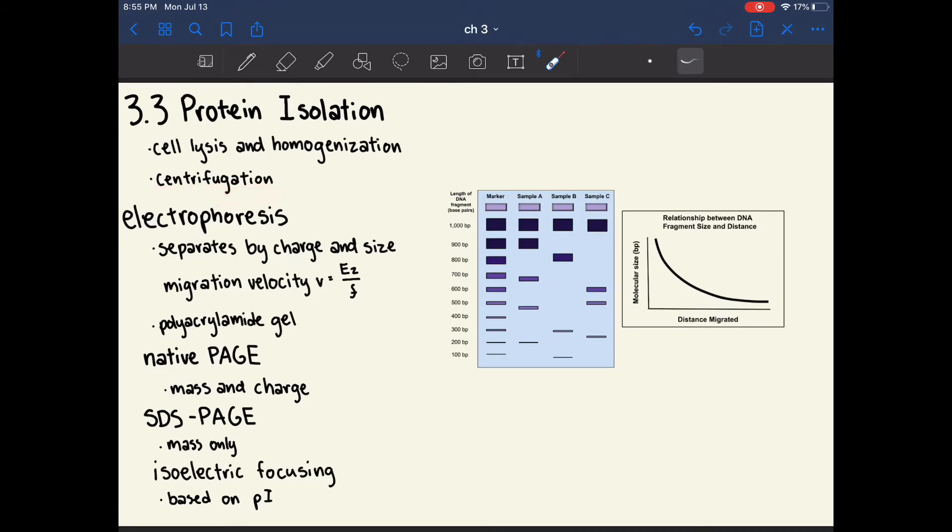Then the contents are centrifuged, which separates by density. Electrophoresis is an important technique in protein isolation. Electrophoresis is typically done on a gel where all of the samples of interest are placed on the starting line. Then an electric field is applied, and the distance that a certain protein travels down the gel is determined based on its charge and its size.